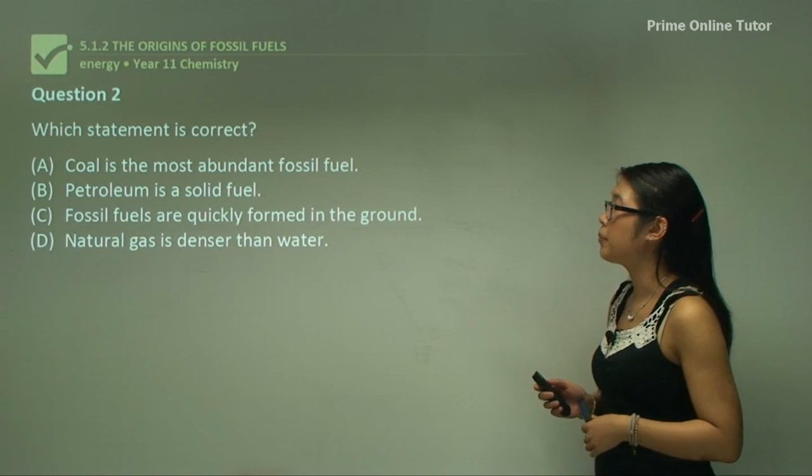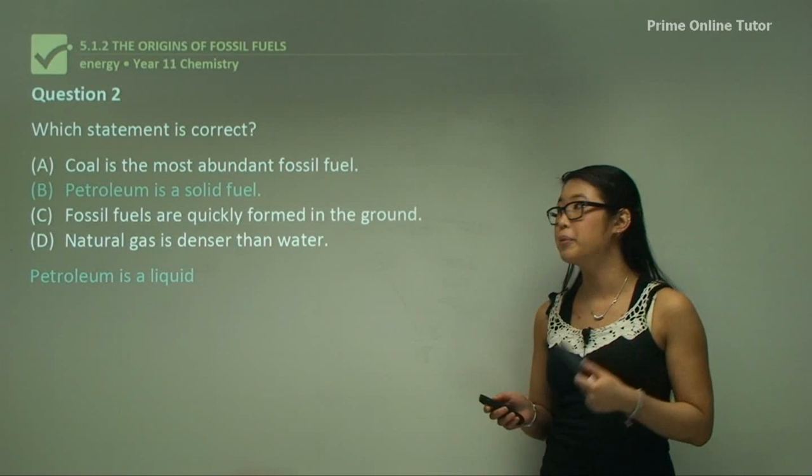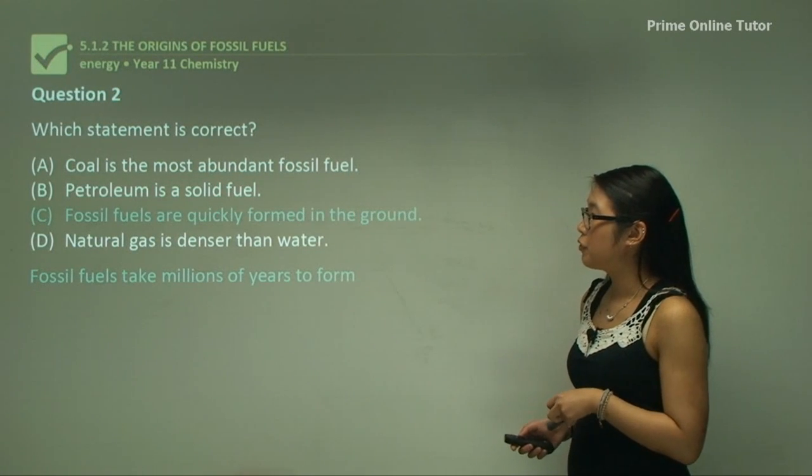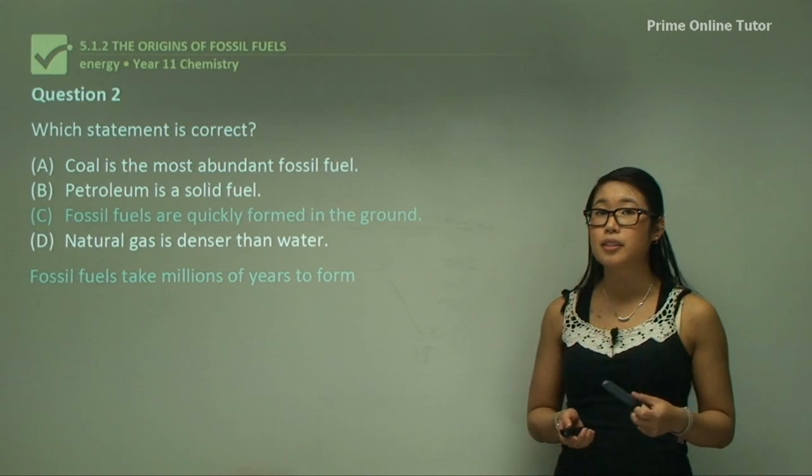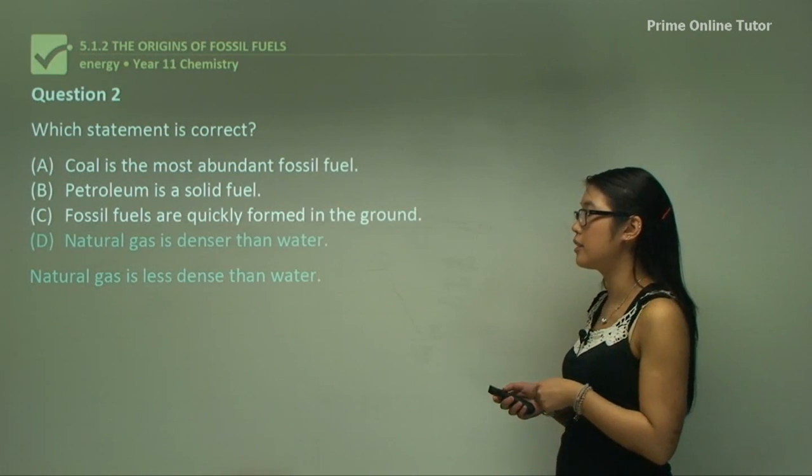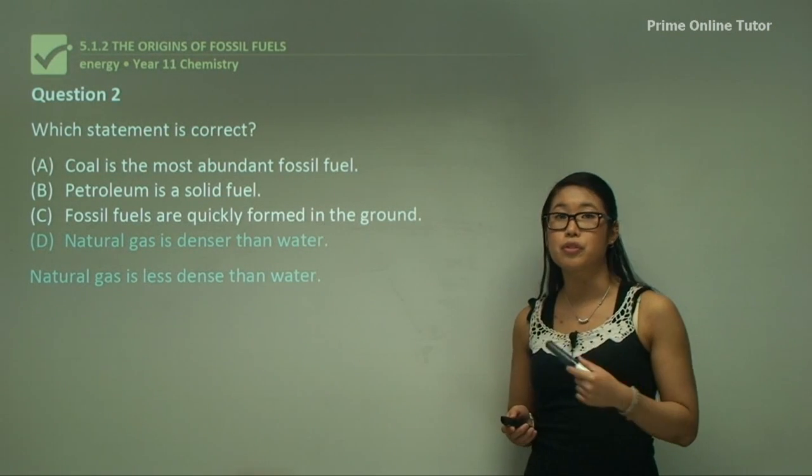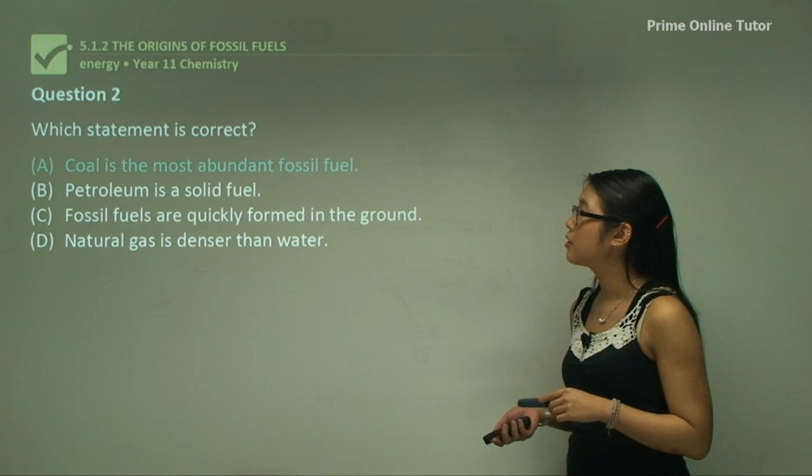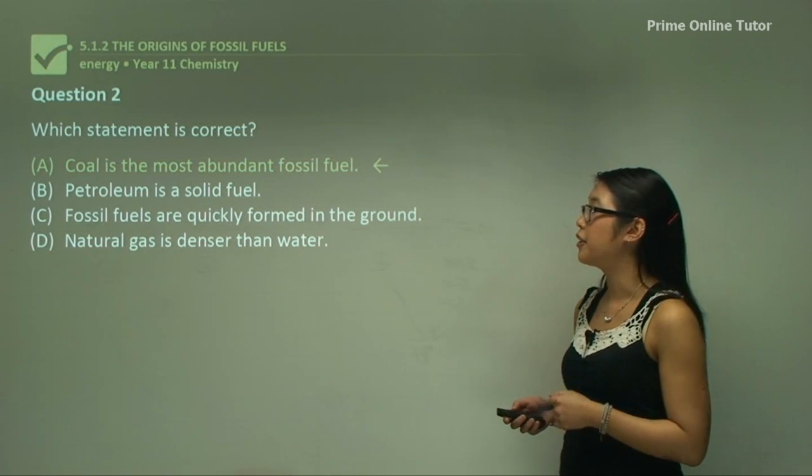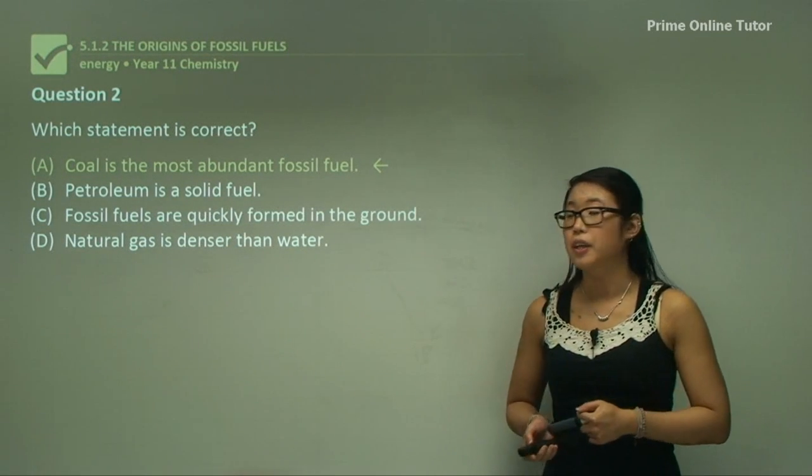Question two: which statement is correct? Petroleum is a solid fuel. No, petroleum is a liquid fuel. Fossil fuels are quickly formed in the ground. No, they take millions of years to form. Natural gas is denser than water. It is not denser than water; natural gas usually floats on top of the water. Coal is the most abundant fossil fuel. Yes, it is, and Australia has most of the abundant deposits of coal in the world.